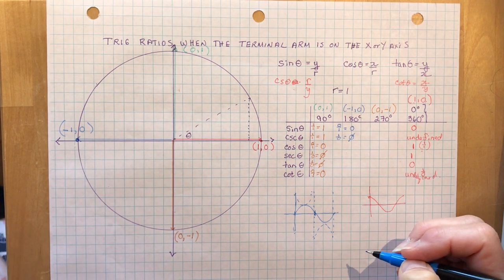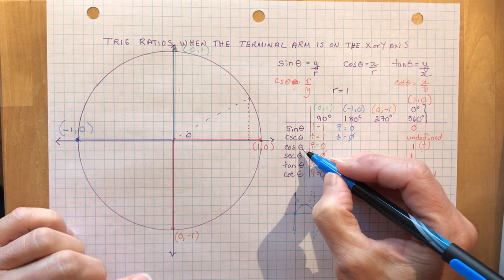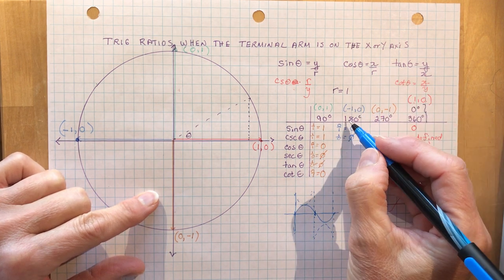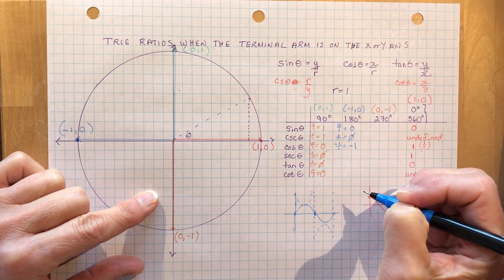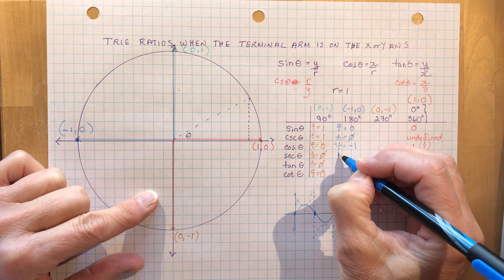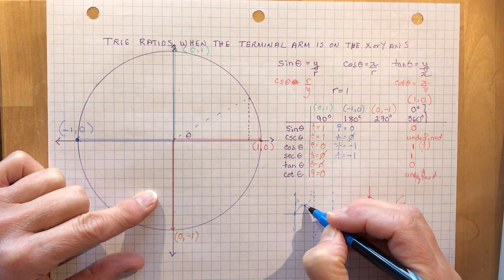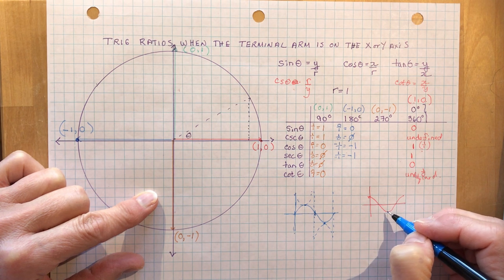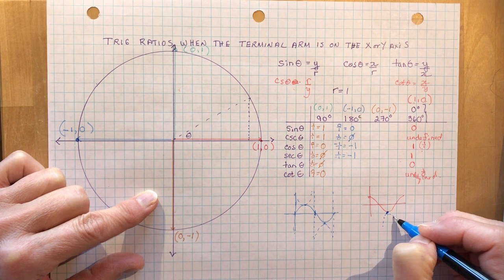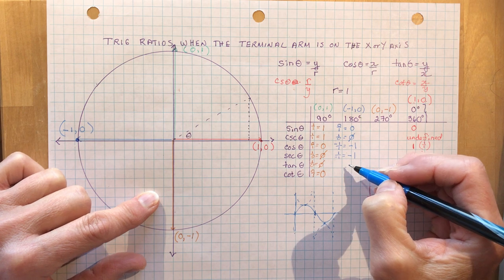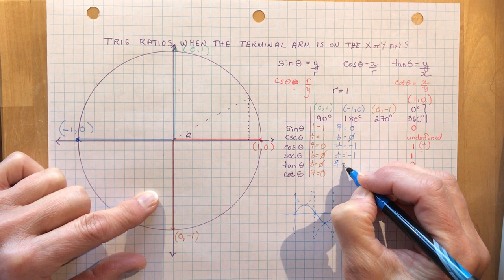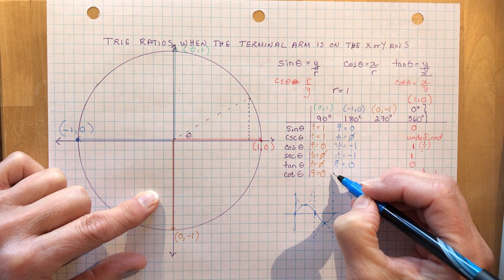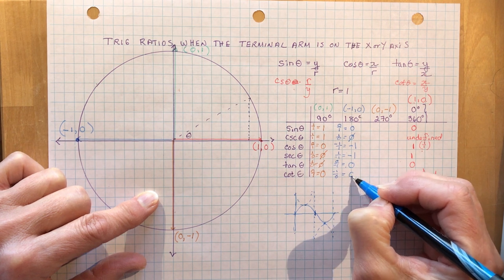The cosine of theta at 180 degrees is X over R: X is negative 1 over R which is 1, so that's negative 1. The secant is 1 over negative 1, which is the same thing. The tangent is Y over X: 0 divided by negative 1 is 0. And the cotangent is X over Y: negative 1 divided by 0, which is undefined.